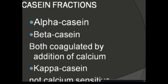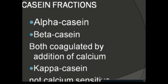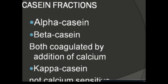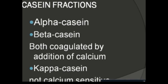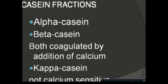Casein exists in fractions and is found in four types: alpha-s1, alpha-s2, beta-casein, and kappa-casein. Due to these casein fractions, the protein structure ranges from secondary to tertiary type. Among them, the difference is that alpha and beta-casein are easily coagulated by the addition of calcium, while kappa-casein is not calcium-sensitive and is not easily coagulated by calcium.